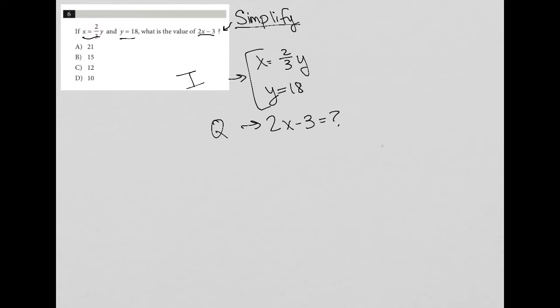I have this x equals two-thirds y, but then I'm told that y is equal to 18, which means I can substitute this y with 18. So let's see what happens when I do that.